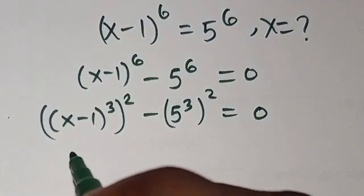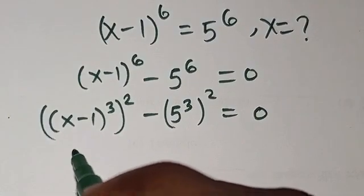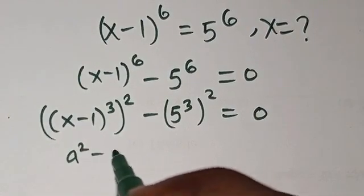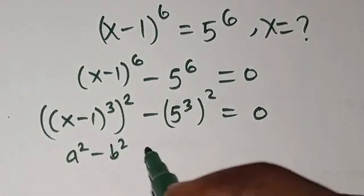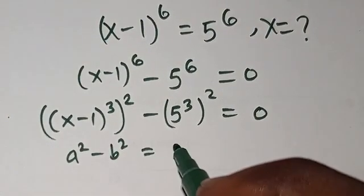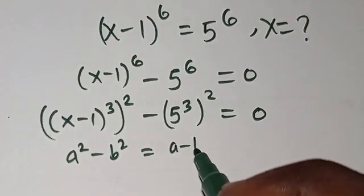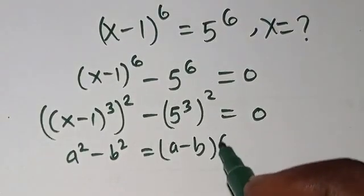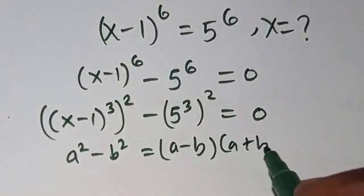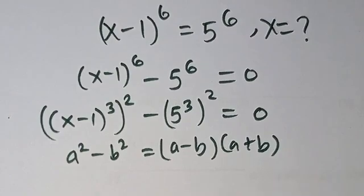Now from here, from the difference of two squares, we have a squared minus b squared. This must give us a minus b, then a plus b. So now we move on.